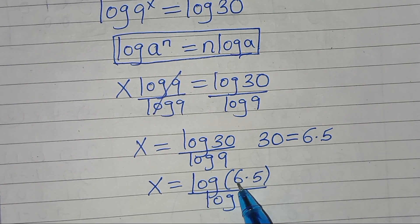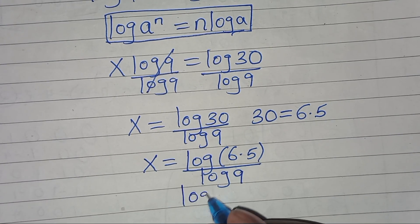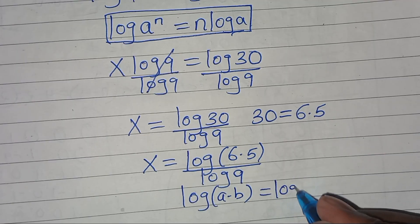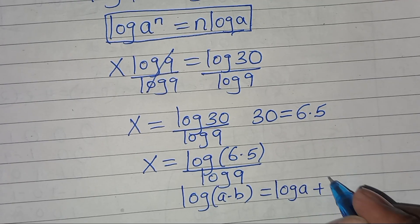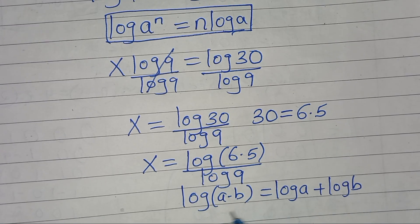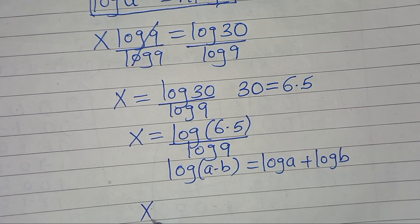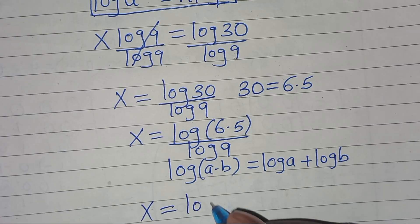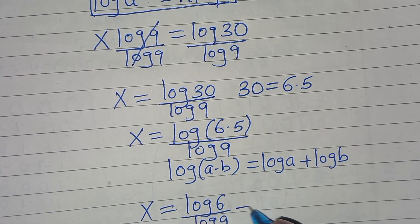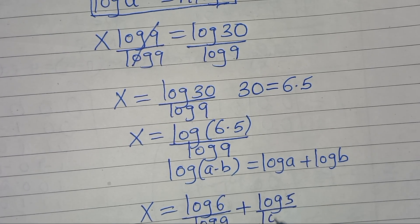We find that log(6 times 5) is in the form of log(a times b), which we can express as log a plus log b. Applying this logarithm property, x equals log 6 divided by log 9, plus log 5 divided by log 9.